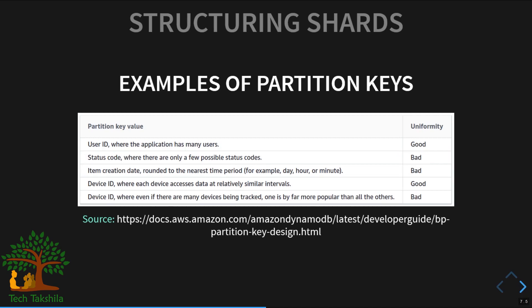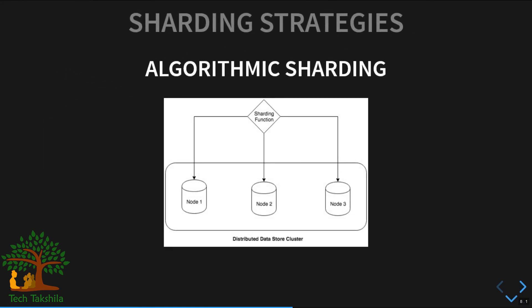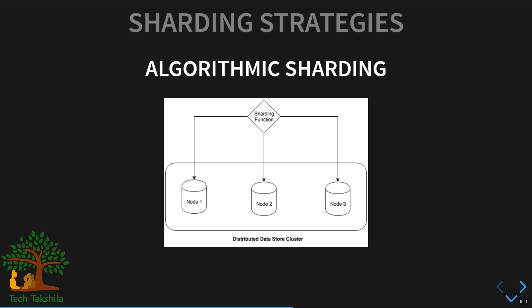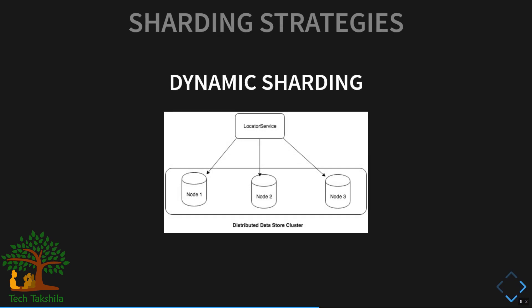Now let's look at sharding strategies. The first is algorithmic sharding: you wrap a sharding hash function in your database code to correctly identify the partition for reads and writes. The advantage is more control over your sharding logic. The downside is that whenever you update the sharding code, all hosts must receive the update — otherwise a stale host may read from or write to the wrong partition. A great example of algorithmic sharding is consistent hashing, as used in Memcached. We have a dedicated video on consistent hashing linked in the description.